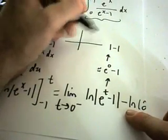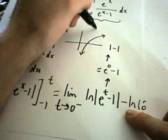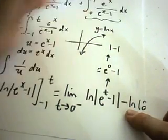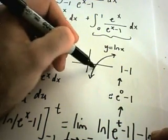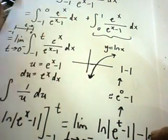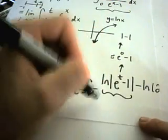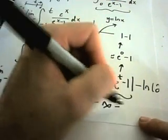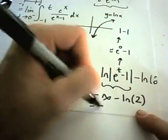If you think about the graph of ln of x, recall that ln of x looks like that, and as you get close to 0, ln of x goes down to negative infinity. So this limit is actually going to turn out to be negative infinity minus ln of 2.